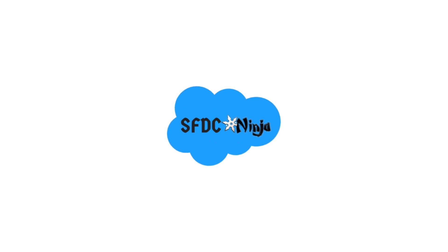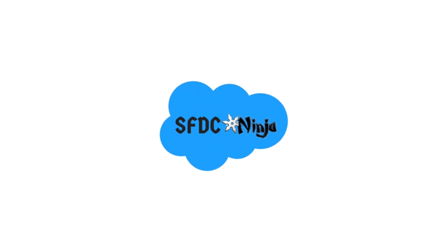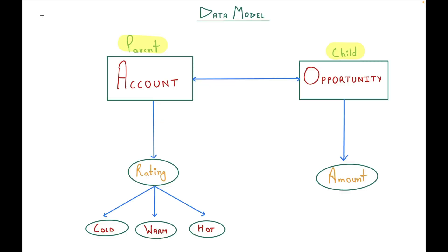Welcome back to SFDC Ninja. Today we'll be tackling another interesting trigger scenario. Let's take a look at the data model. We have two objects: Account, which is the parent object, and Opportunity, which is the child object. On Account we have a picklist field called Rating with three values — Cold, Warm, and Hot — and from Opportunity we'll use the Amount field.